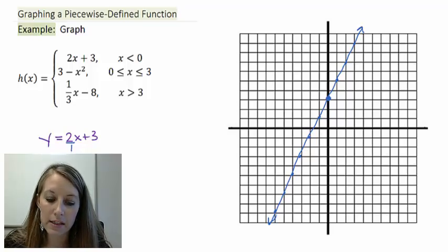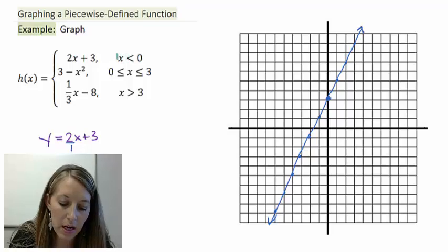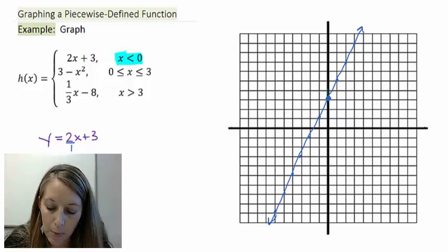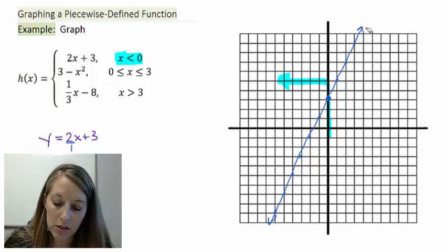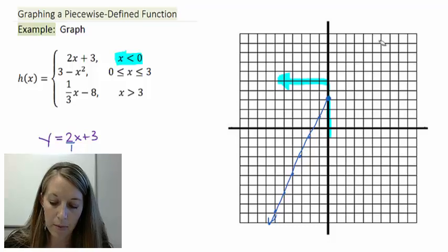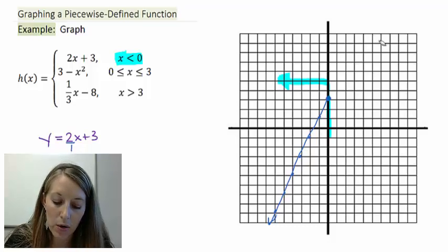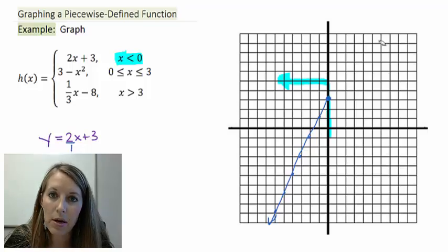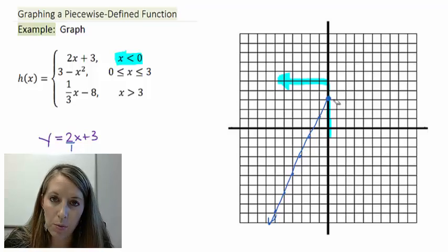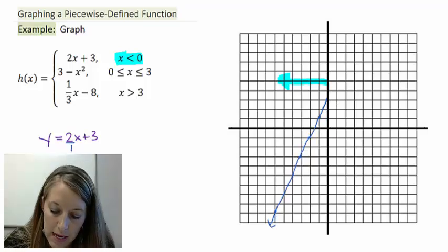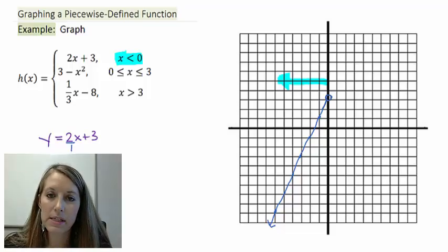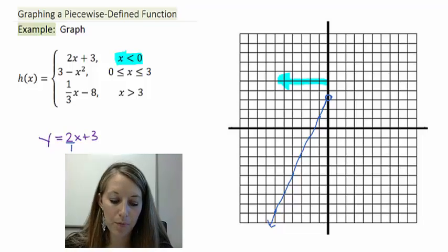Now, that's the graph of this line entirely, but I only want this line when x is less than 0. So my separator is 0, which is the same as my y-axis, and I want the less than part of it, so the region to the left. So that means I get to erase or get rid of everything on the right. Now, at 0, I notice I do not have an or equal to bar here. That means 0 is not included in this piece of the graph. So I need to get rid of my closed circle here and replace it with an open circle.